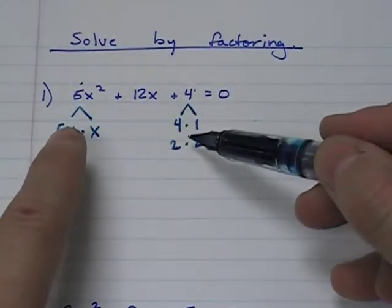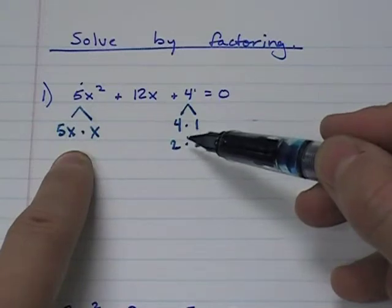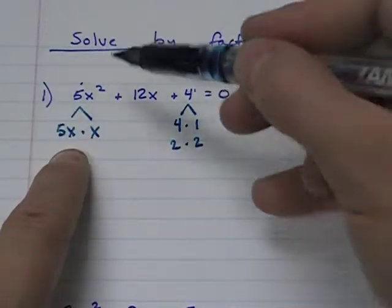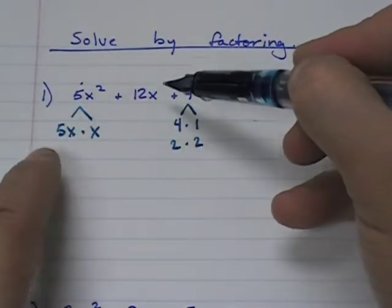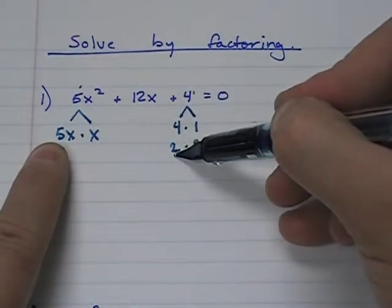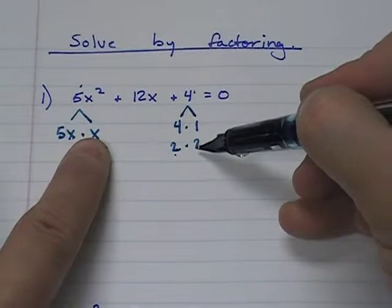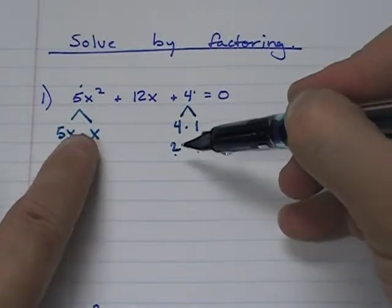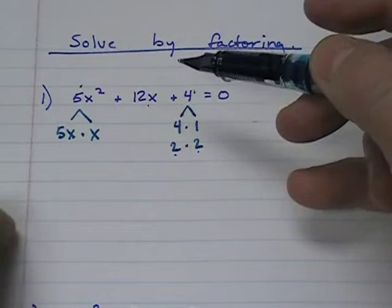And then the product of these numbers here and here have to add up to give you 12. And what I know is 5 times 2 is 10 and 1 times 2 is 2. And 10 and 2 make 12.